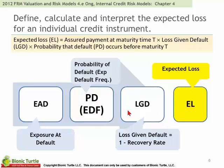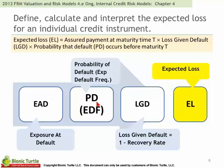The expected loss is a product of three inputs: the exposure, the probability of default, and the loss given default. If we drop the exposure and think only in percentage terms, it's simply a product of two variables: probability of default and loss given default. If they are independent, we multiply them together.